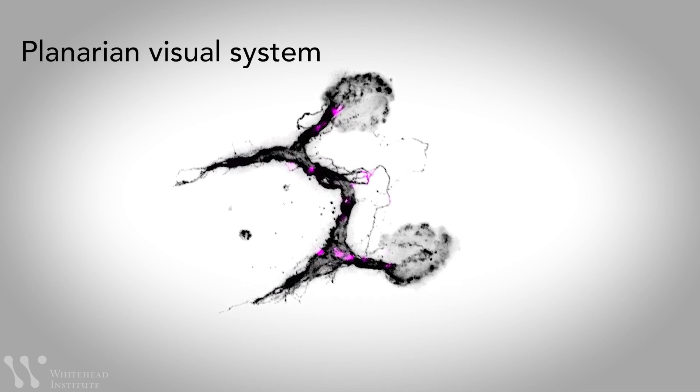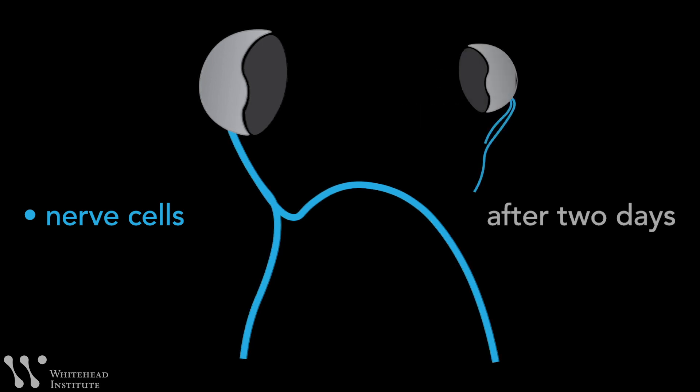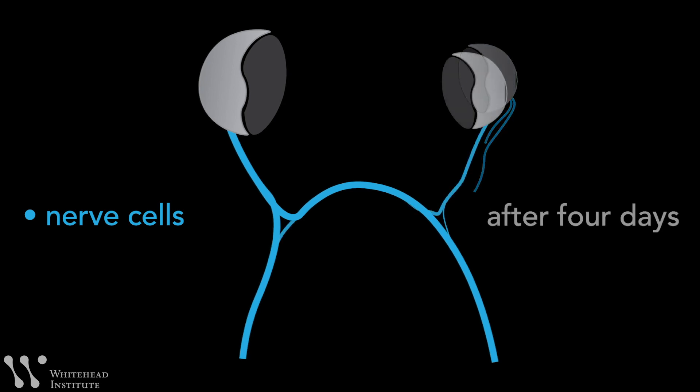With small surgeries, you can remove the eye and only the eye. That makes this system very powerful because you're not injuring the whole brain, you're only removing the eye. You can also transplant them and see how the system is wired into the brain and which mechanisms are required to do so.